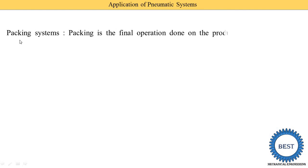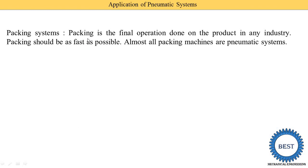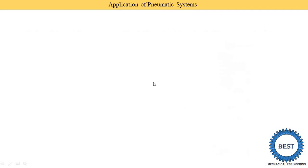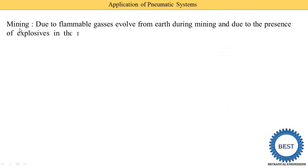The next application is packing systems. Packing is the final operation done on a product in any industry. Every industry produces some product, and that final product is completed using packing. Packing should be done as fast as possible, and almost all packing machines are pneumatic systems. Here you see packing machines used for some grocery products.